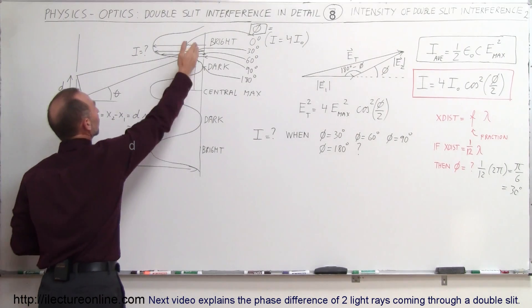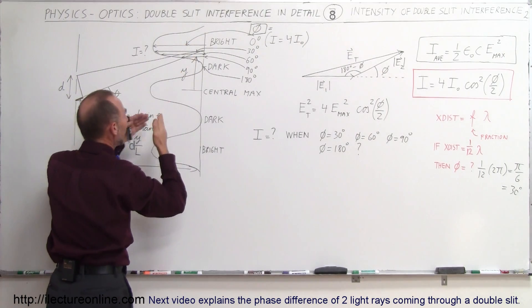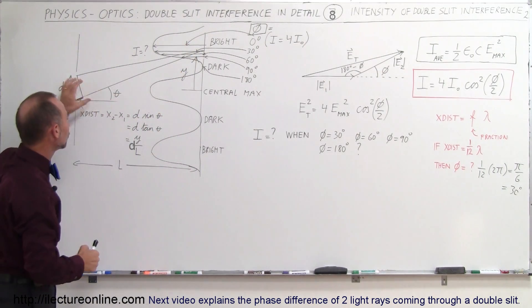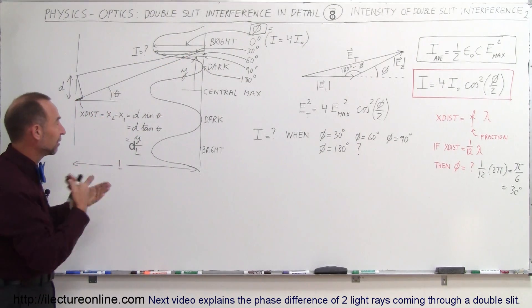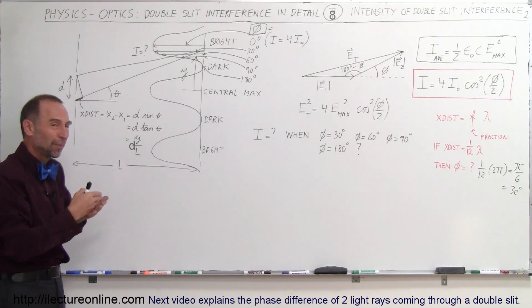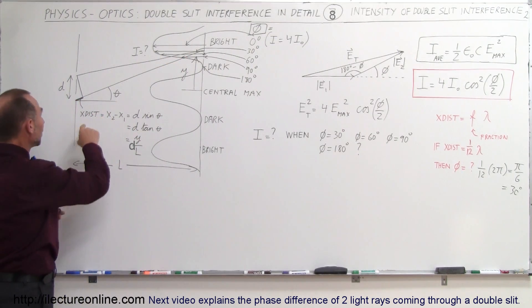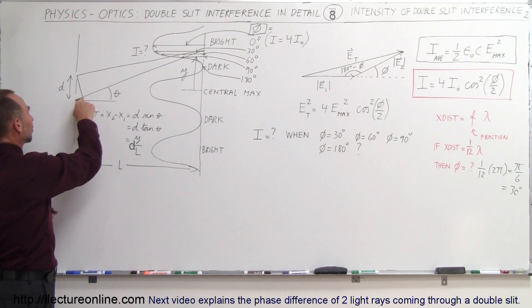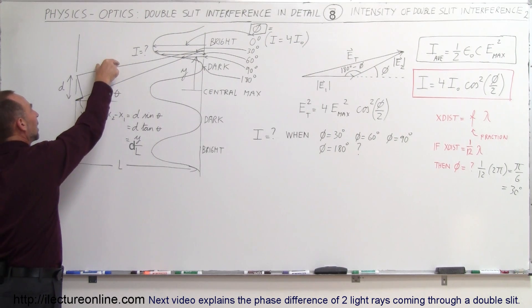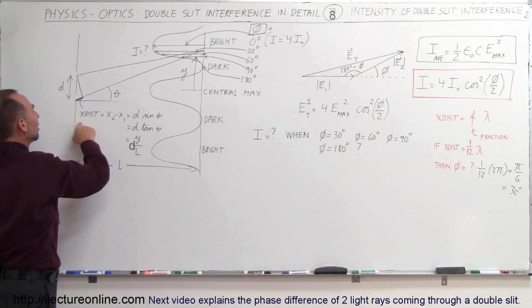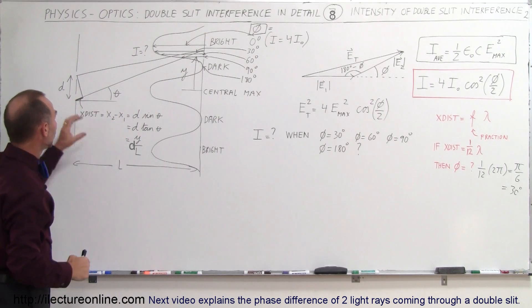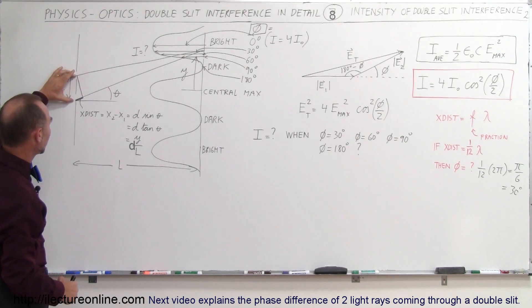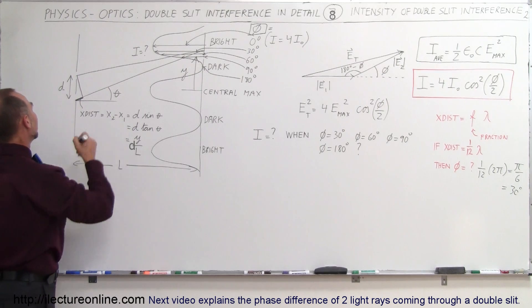At any point on the screen, we'll have some sort of interference pattern when the two beams come together, because each beam will have traveled a different distance compared to the other. The extra distance traveled — the path length difference, x2 minus x1 — can be found by taking the distance between the two slits, d, times the sine of the angle theta.